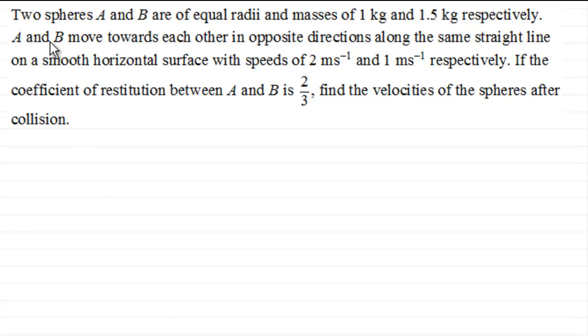We've got here two spheres A and B, which are of equal radii and masses of 1 kilogram and 1.5 kilograms respectively. A and B move towards each other in opposite directions along the same straight line on a smooth horizontal surface with speeds of 2 metres per second and 1 metre per second respectively. If the coefficient of restitution between A and B is 2/3, find the velocities of the spheres after collision.